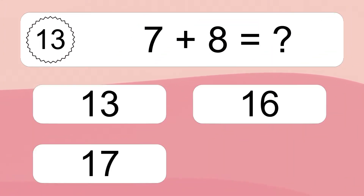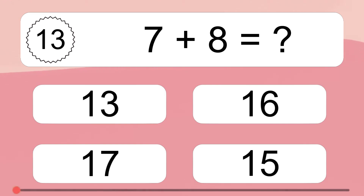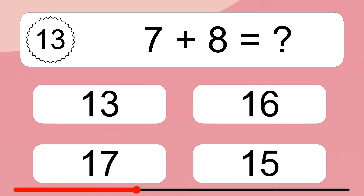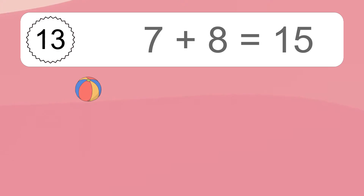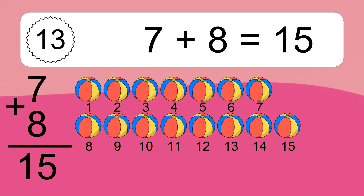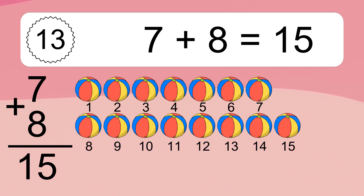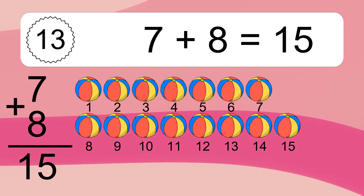7 plus 8 equals what? 7 plus 8 equals 15. Let's count it: 1, 2, 3, 4, 5, 6, 7, 8, 9, 10, 11, 12, 13, 14, 15.